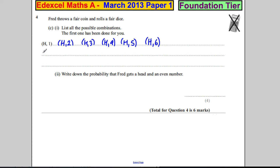So he could get a tail and a one, a tail and a two, a tail and a three, a tail and a four, a tail and a five, and a tail and a six. And that's all the possibilities. Write down the probability that Fred gets a head and an even number.